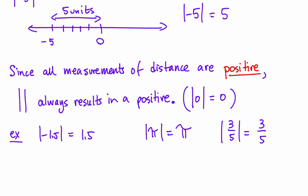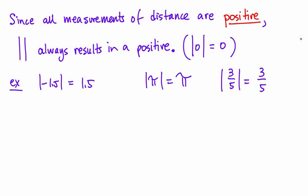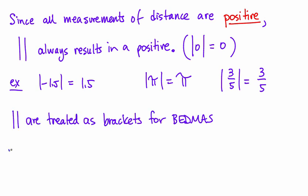And one other thing about absolute values is that we basically treat them as brackets for BEDMAS. And so by example, what that means is if you have absolute value of negative 4 plus 6, the first thing you do in BEDMAS is inside of brackets.